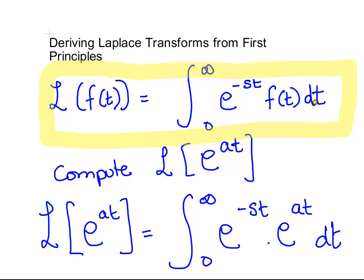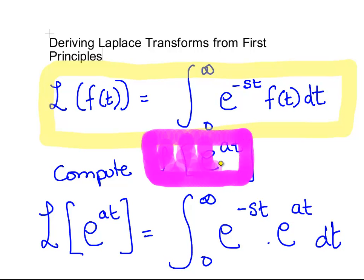What we're going to do is try out this function to see if we can get this to work. This is the Laplace transform of e^(at). If I write it out using that formula, I would have e^(-st) times e^(at).